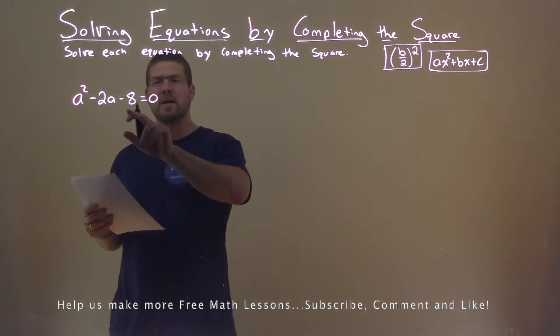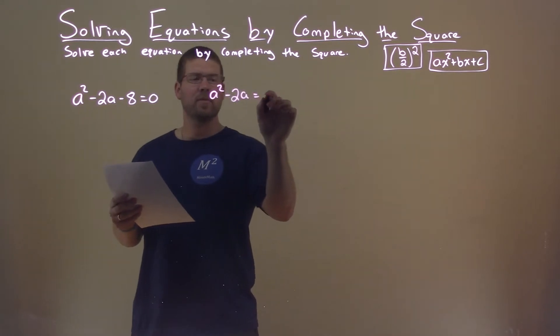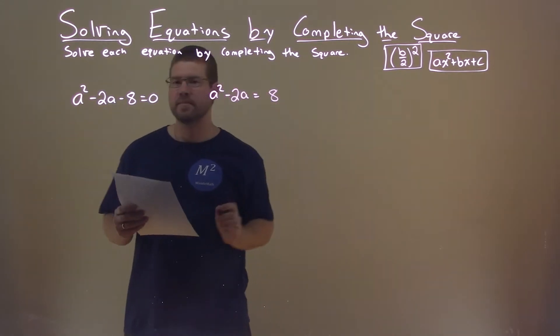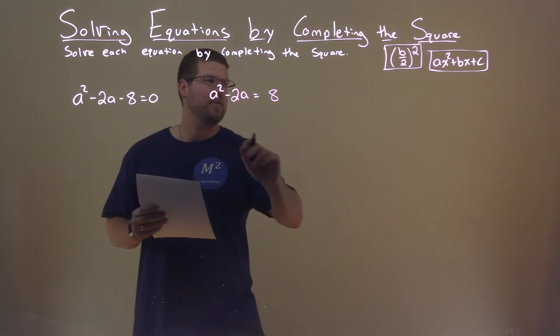First thing I'm going to do is add 8 to both sides. So we have a squared minus 2a equals positive 8. With that, I look at my b value, which is negative 2.